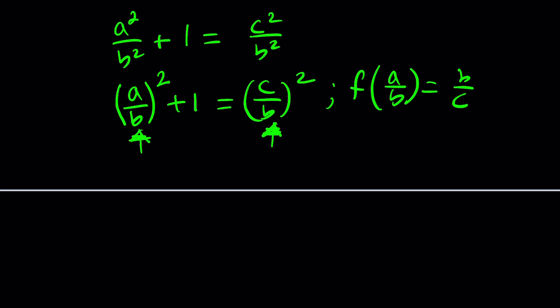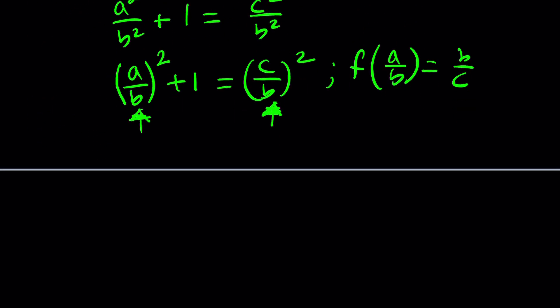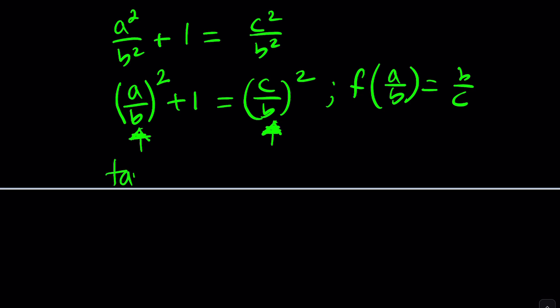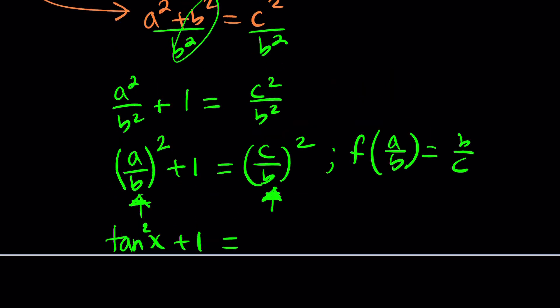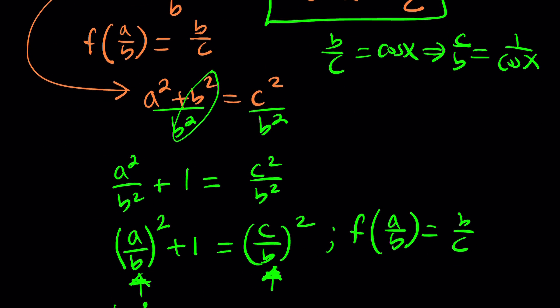This turns into a trigonometric identity. How? What is a over b? a over b is tangent. So this is tangent squared. This is 1. What about c over b? Well, c over b is not cosine. It's the reciprocal of cosine. In other words, if b over c is cosine, then c over b will be 1 over cosine. But what is 1 over cosine?